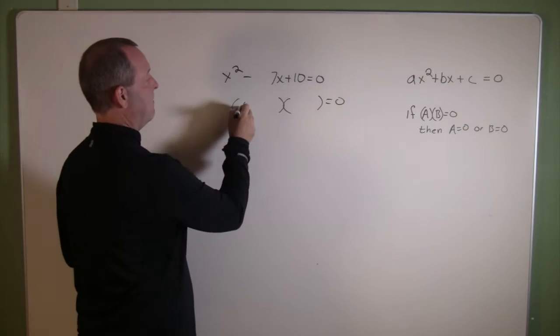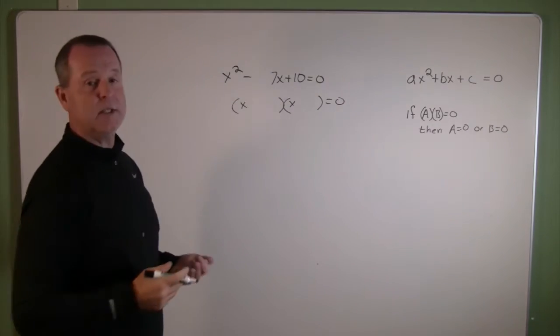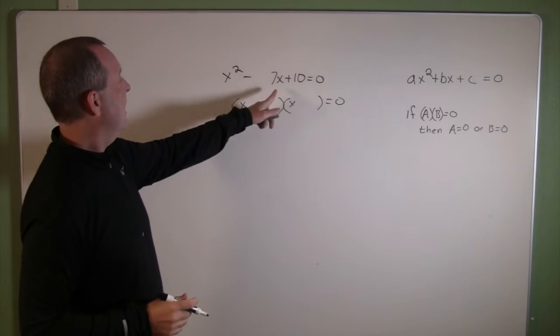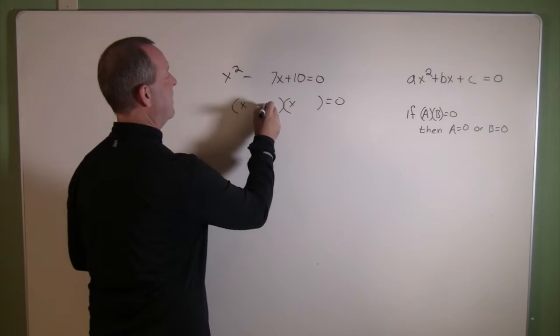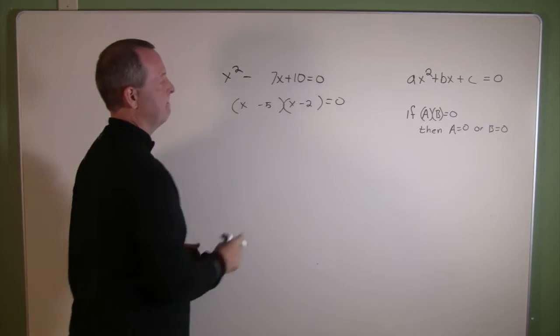So if I factor that, remember how we factor that? In this particular one, it's a trinomial with trial and error. It looks like a negative 5 and a negative 2.